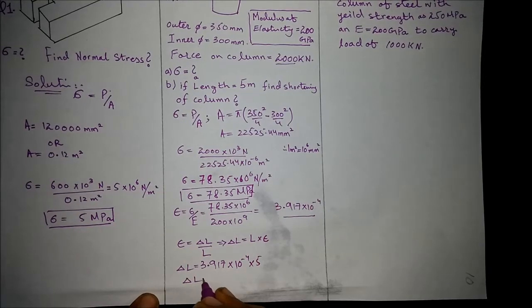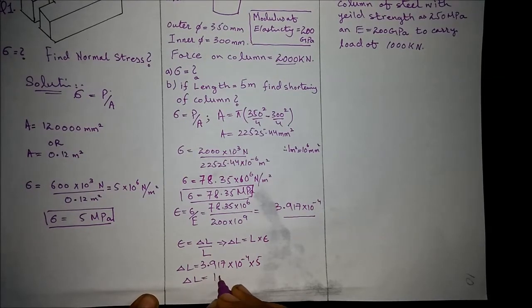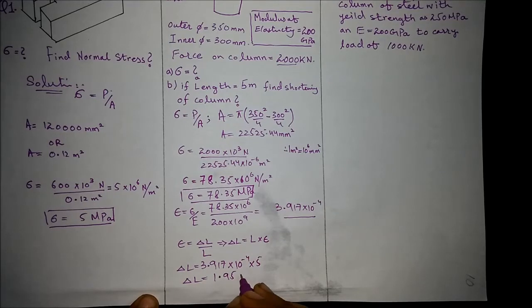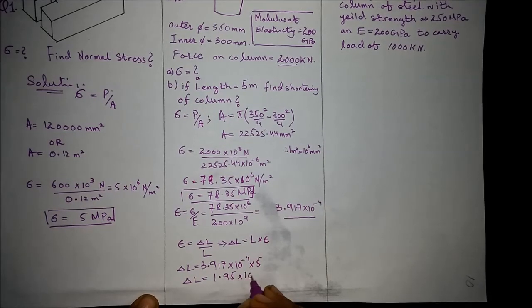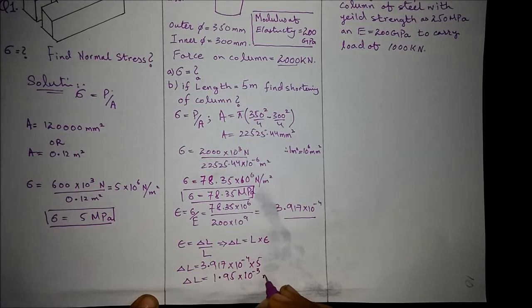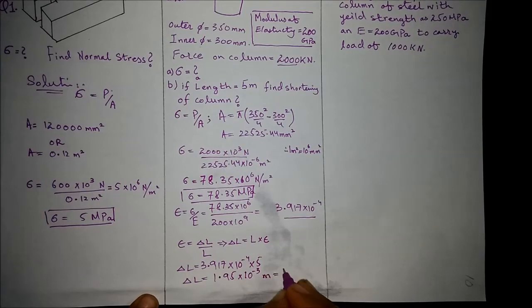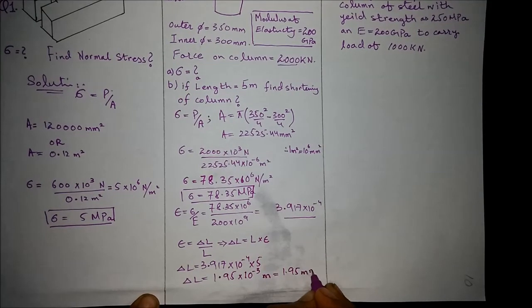It comes out to be delta L equals 1.95 times 10^-3 meter, or you can say 1.95 millimeter. This is the second answer.